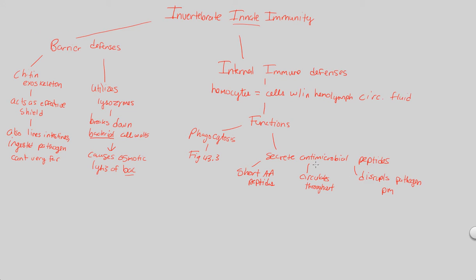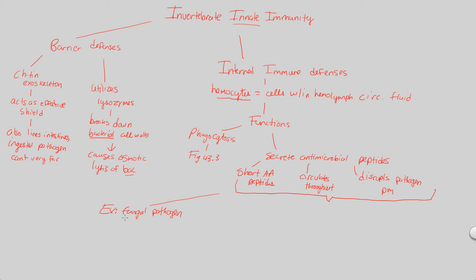Let's look at an example of how an insect uses antimicrobial peptides against innate immunity. Say an insect gets a fungal infection — a fungal pathogen enters. Remember, this is innate immunity, so it's nonspecific: it's not a specific fungus, just a fungal pathogen generally. How does the insect's innate immunity work to defeat it?